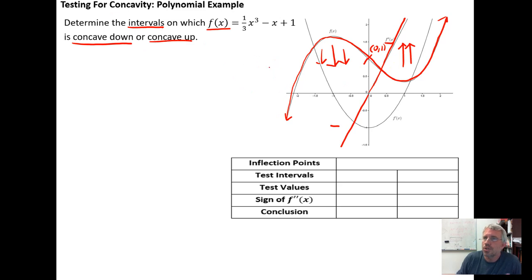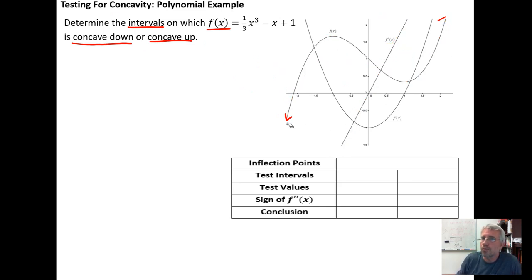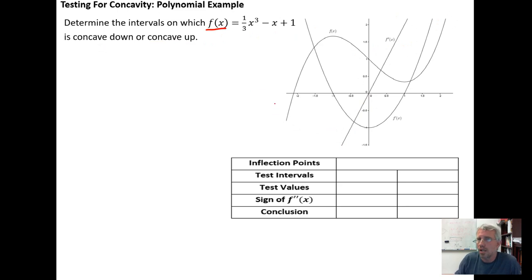The first step in determining the intervals over which a function is concave up or concave down is to identify the domain of the function. Looking at this third-degree polynomial, I know that the domain of polynomials is from negative infinity to infinity. That's step one: what is the domain of the function?